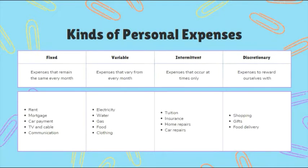Fixed expenses are those we pay repeatedly in the same amount, such as house or room rent, mortgage, car payment, or TV and cable subscriptions. For example, if you subscribe to a telecom company with a two-year contract — like PLDT or Converge — these are fixed expenses based on your lifestyle.